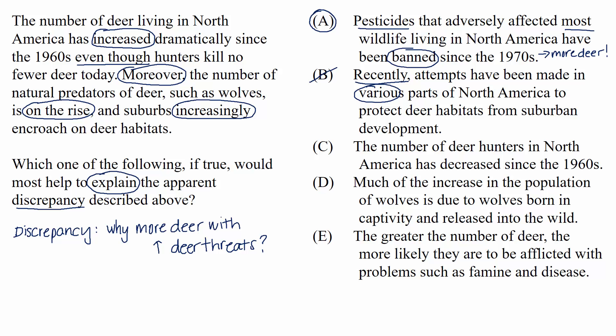Choice C: the number of deer hunters in North America has decreased since the 1960s. At first glance, this could be tempting because it seems like a good thing for the deer if the number of deer hunters has decreased. But remember what the passage told us — hunters kill no fewer deer today. So even though the number of hunters has gone down, the hunters who are left are still killing as many deer, if not more. So the mystery remains.